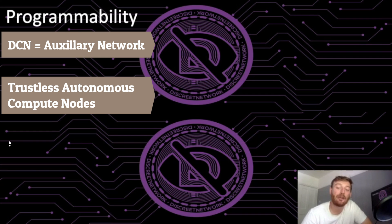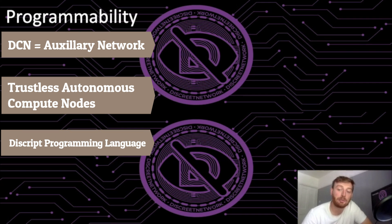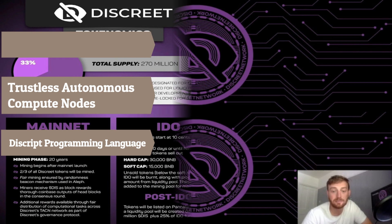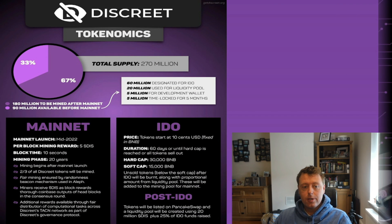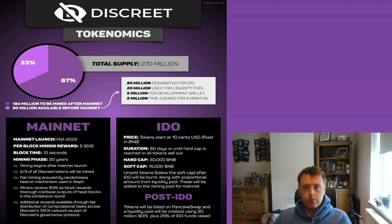There's also programming in a language called Descript, which helps execute these smart contracts. In terms of the tokenomics, there are 270 million total DIS tokens.